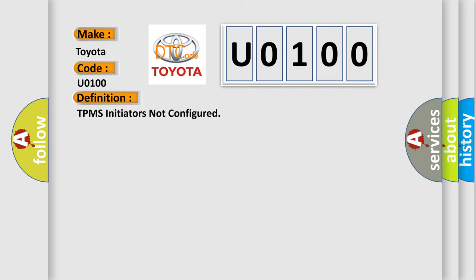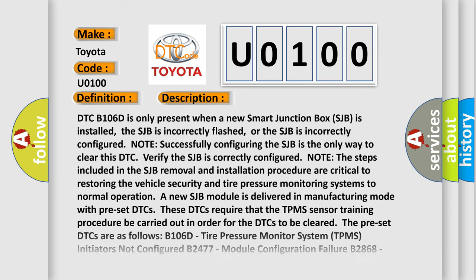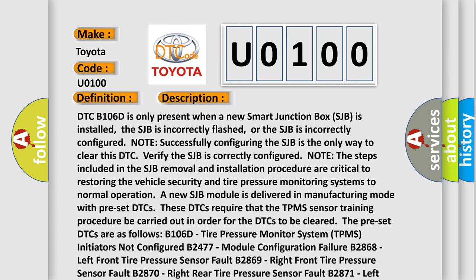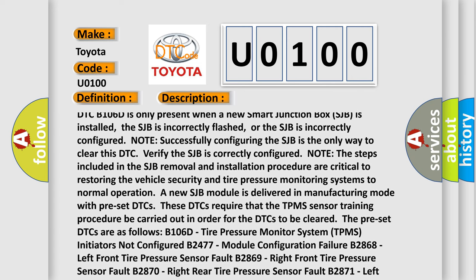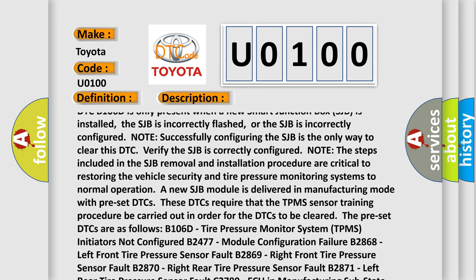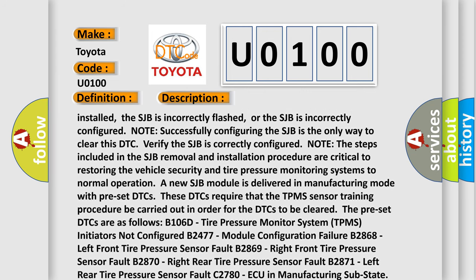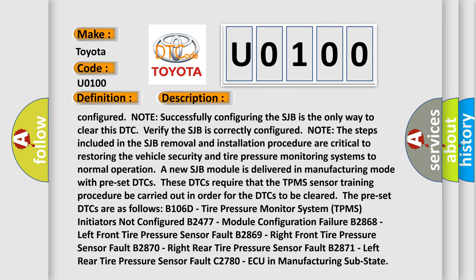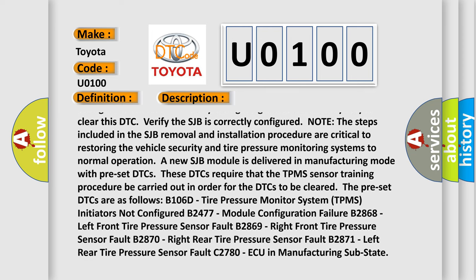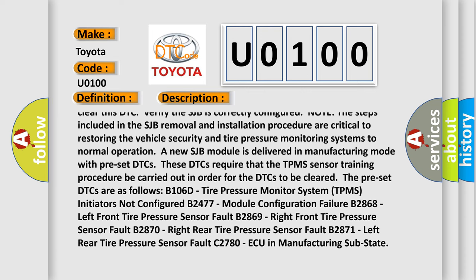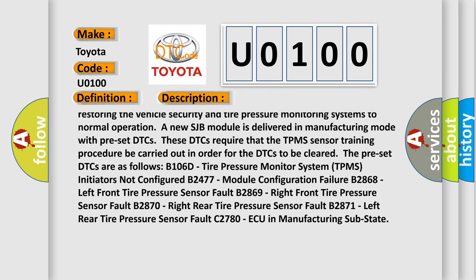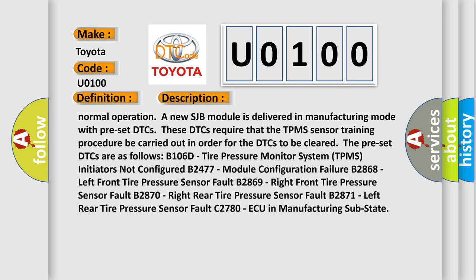The basic definition is: TPMS initiators not configured. DTC B106D is only present when a new smart junction box (SJB) is installed, the SJB is incorrectly flashed, or the SJB is incorrectly configured. Note: successfully configuring the SJB is the only way to clear this DTC. The steps included in the SJB removal and installation procedure are critical to restoring the vehicle security and tire pressure monitoring systems to normal operation. A new SJB module is delivered in manufacturing mode with preset DTCs.